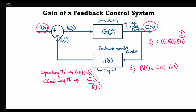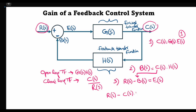Now this error signal can be written in terms of the reference signal and the feedback signal. As you can see, the feedback signal B(s) gets subtracted from the reference signal, so R(s) minus B(s) equals E(s). Substituting the value of B(s) from equation 2 into equation 3, we get R(s) minus C(s)·H(s) = E(s), which we call equation number four.